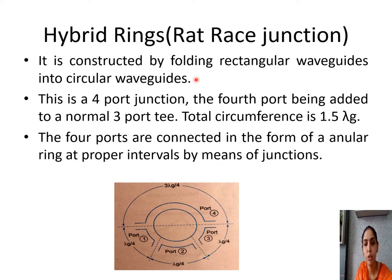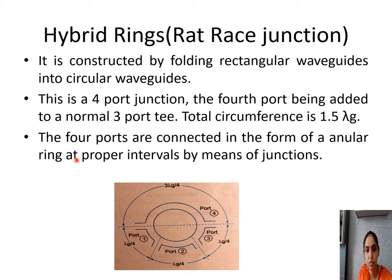It is constructed by folding rectangular waveguides into circular waveguides. We have a 4-port junction in a rat race, where the necessary condition for construction of a hybrid ring is that the total circumference of this ring structure must be 1.5 lambda-g by 4.